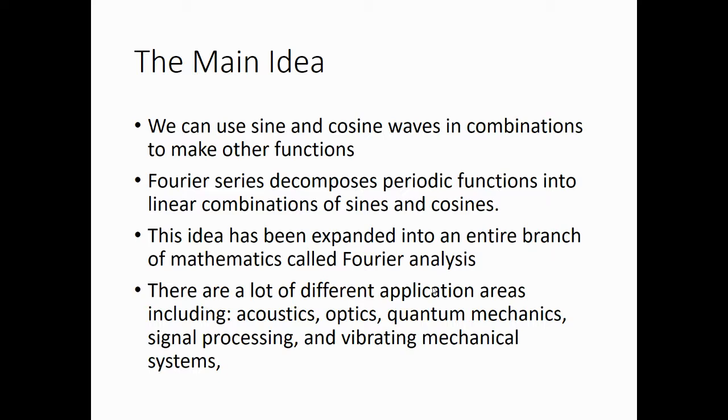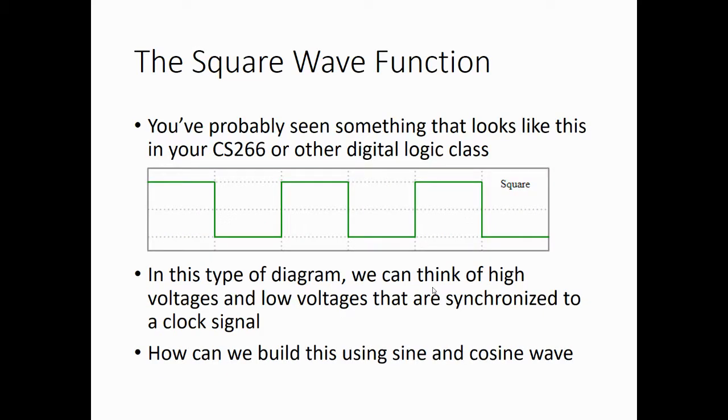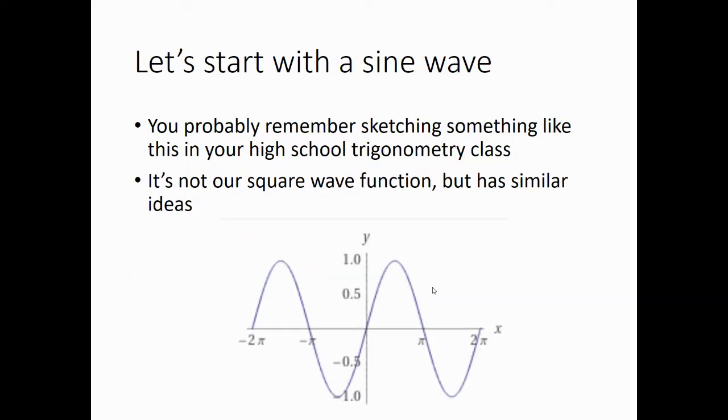So, let's take a look at a quick example. You've probably seen something like this in your 266 or other digital logic classes. In this type of diagram, we can think of high voltages and low voltages that are synchronized to clocks. How can we build this using sine and cosine waves? You probably remember sketching something like this in your high school trigonometry class. It's not really our square wave function, but it has some similar ideas with the peaks at 1 and the lows at minus 1. And we could actually normalize that to 1 and 0 if we wanted to.